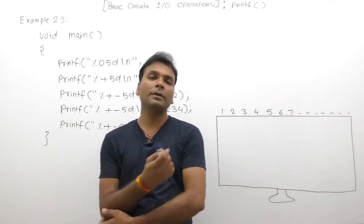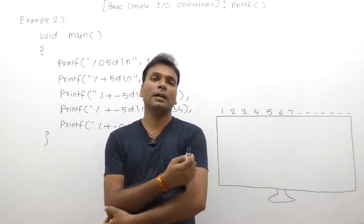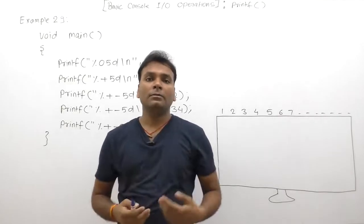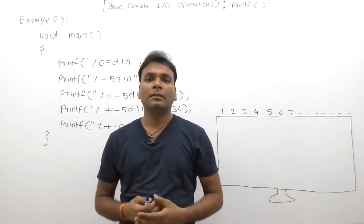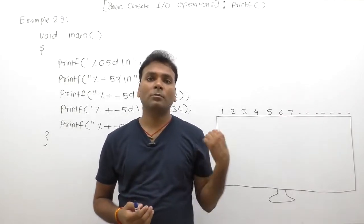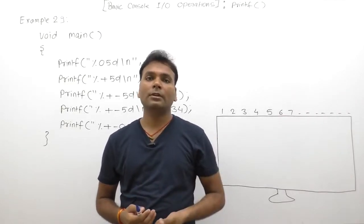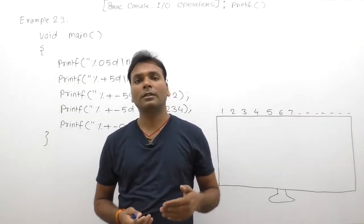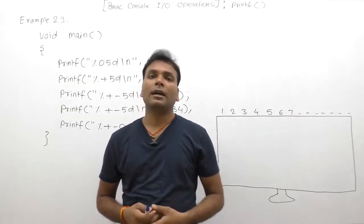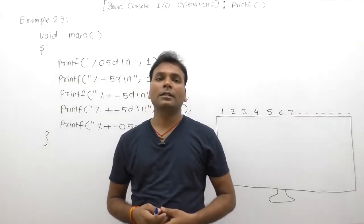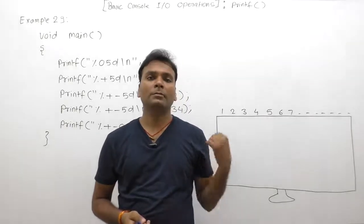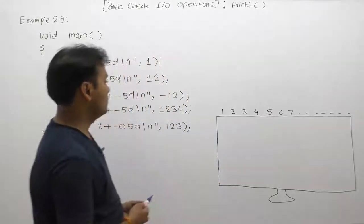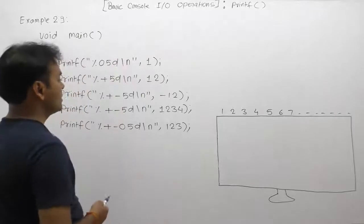Similarly, the minus flag is a justification flag. It specifies whether the given number is displayed from left-to-right justified or right-to-left justified. In the default case, a number is right justified. When using minus, the number is left justified, meaning it will be displayed according to left justification.